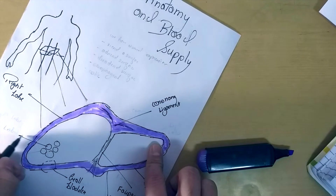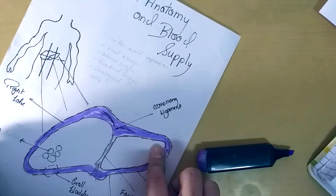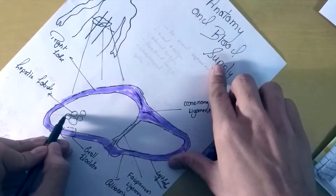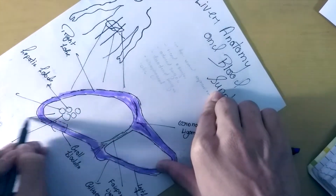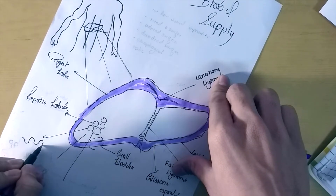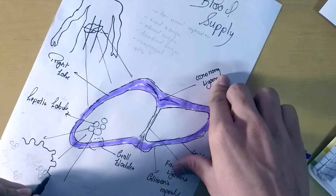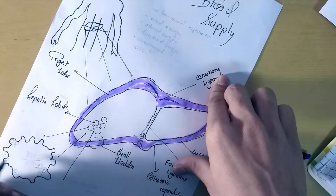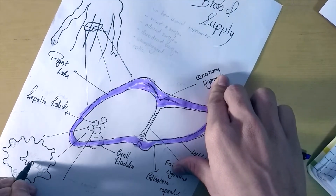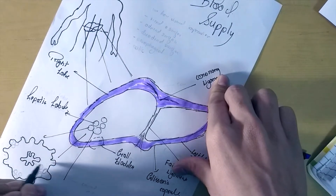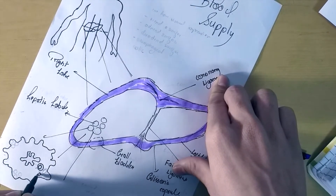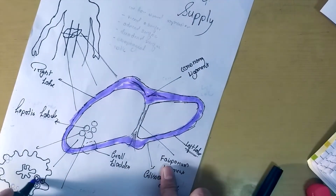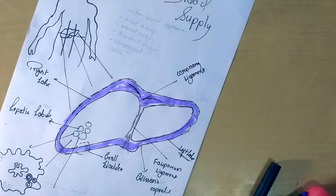The liver is made up of hepatic cells, which are the functional unit of the liver. If we go through the cross-section of a single cell, we see that the functional unit of the liver is the hepatic lobule. It consists of the central vein, a bile duct, a branch of the hepatic portal vein, the hepatic artery, and in the middle we see the central vein.